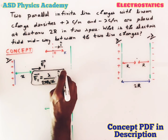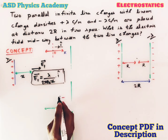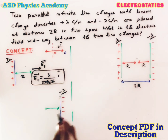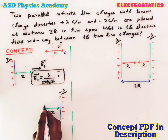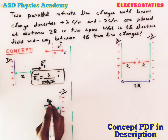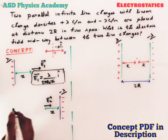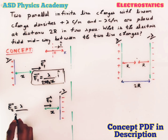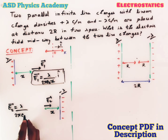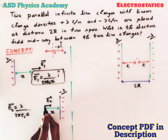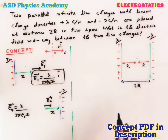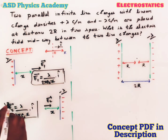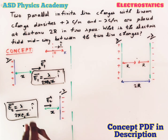Similarly, due to a negative line charge having linear charge density minus lambda, at a distance x the direction of the electric field will be towards the line charge. Its value in vector form — E2 equals lambda by 2 pi epsilon-naught x — and we can see that again the direction is towards the positive x direction, meaning again i-cap.